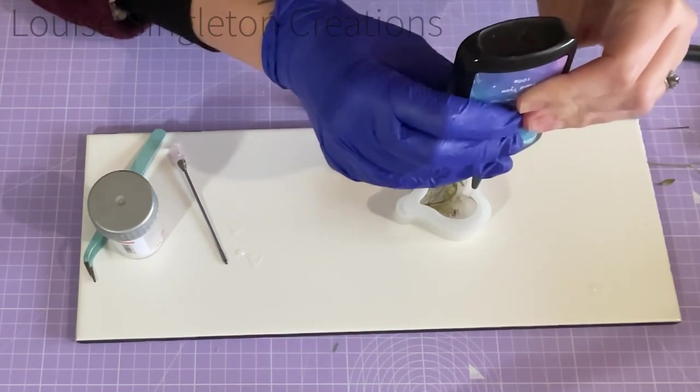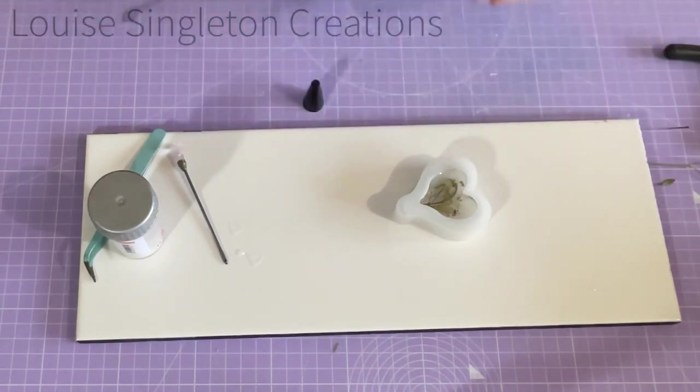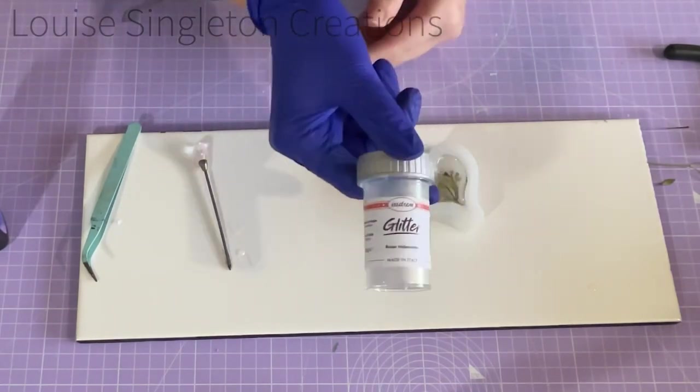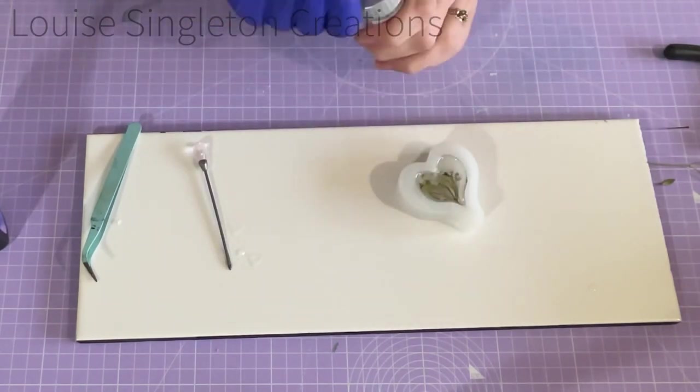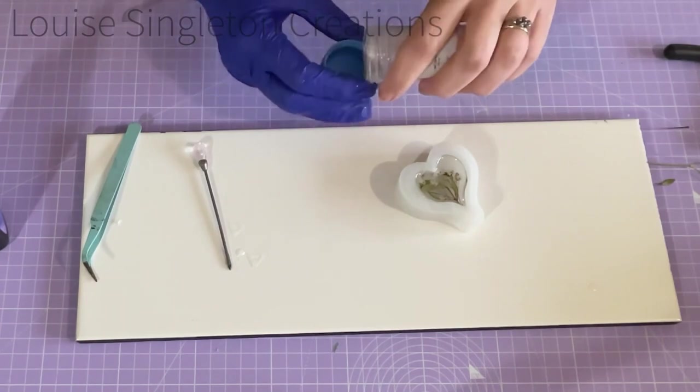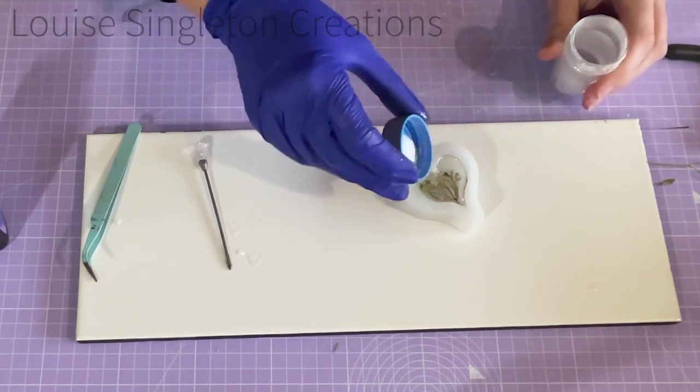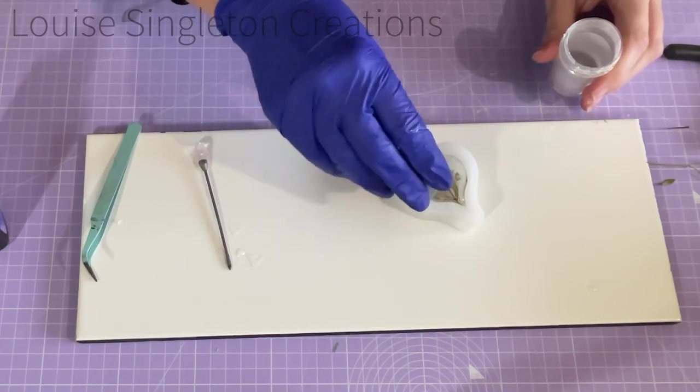As you will have seen, this heart shape is in three layers. For this final layer I've just put the UV resin in and I'm going to sprinkle some glitter on top to give it a bit of interest, so that from behind there's some glitter but at the front there isn't any.